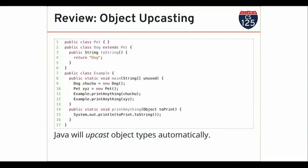When I run this code on line 11, I take something declared as a dog on line 9 and pass it to this printAnything function. Java will automatically take my dog instance and morph it into an instance of Object because it inherits from Object. I could also write printAnything to take a pet, and in that case my dog would be upcasted to a pet.